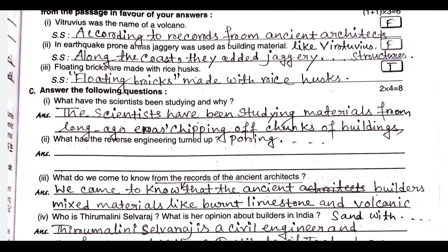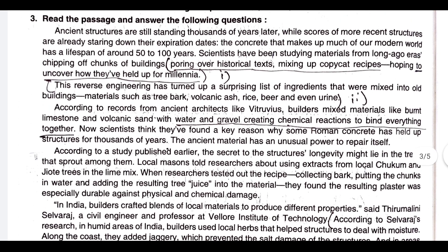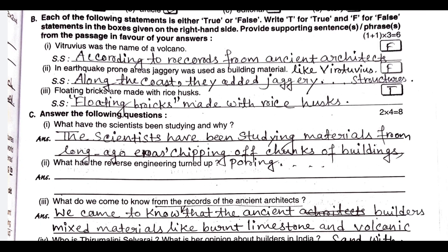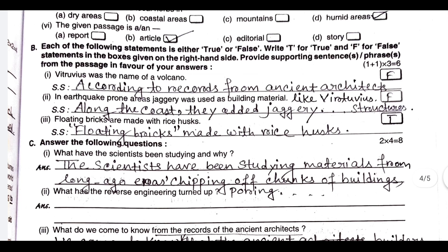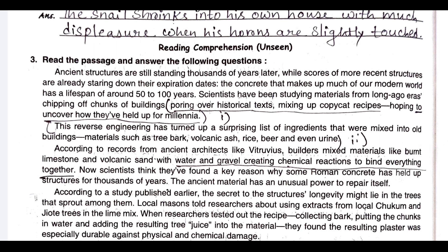What have the scientists been studying and why? The scientists have been studying materials from long ago, chipping off chunks of buildings. What has the reverse engineering turned up? The reverse engineering has turned up a surprising list of ingredients that were mixed into old buildings — materials such as tree bark, volcanic ash, rice, beer, and even urine.